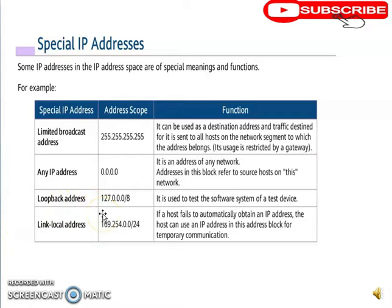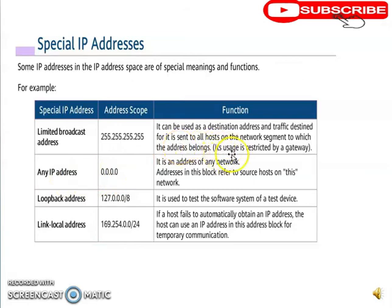Some IP addresses have special meanings. First, the limited broadcast address 255.255.255.255 is used as a destination broadcast address. Note that broadcast usage is limited by a gateway — when a broadcast packet reaches a router, the router discards it and cannot forward it beyond Layer 3, but at Layer 2 the packet can be forwarded endlessly.